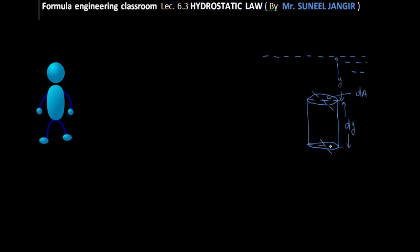Since this fluid element is in a static fluid, the forces acting on it are only one surface force — that is pressure — and one body force — that is the weight of the element. There are no inertia forces, no viscous forces, because the fluid is at rest. On the upper face, the pressure intensity is P. On the lower face, the pressure is P plus (dP/dy)·dy, which represents the change of pressure over the height dy.